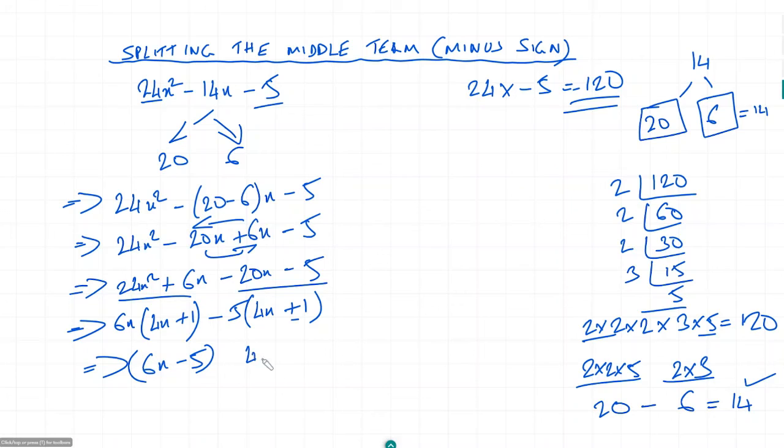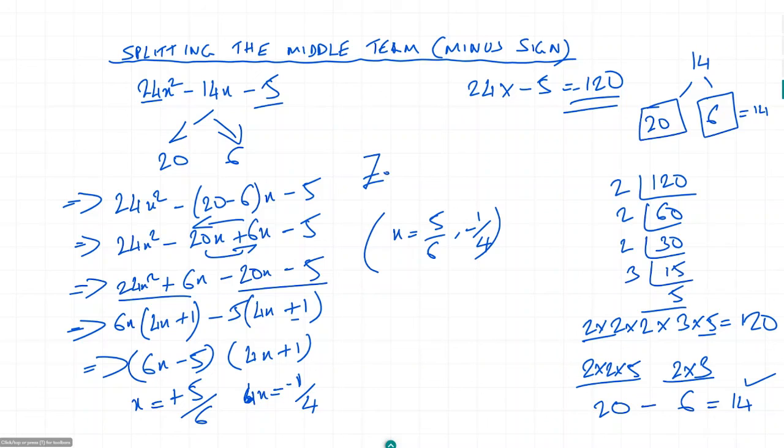So the factorization is (6x minus 5)(4x plus 1). Setting each factor equal to zero: when 6x minus 5 equals 0, x equals 5/6. When 4x plus 1 equals 0, x equals negative 1/4. These are the zeros or roots of the quadratic equation.